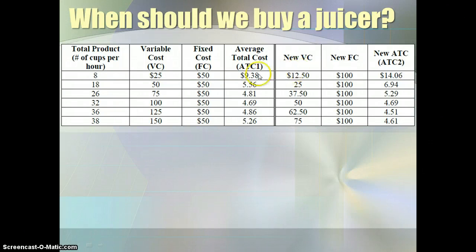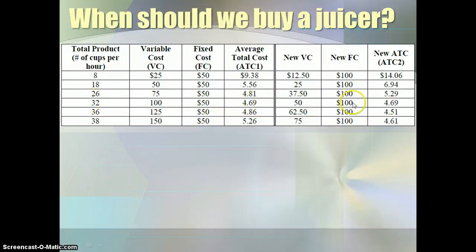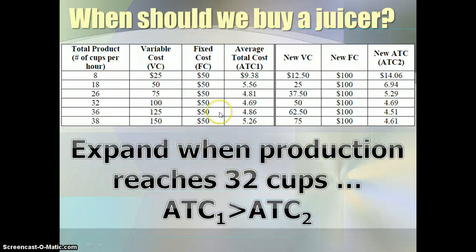They should stick with one juicer until production is greater than 32 cups per hour. At 32 cups per hour, the average total cost with one juicer is exactly the same as with two juicers — so at that point they're indifferent. But if they plan to make 33 cups or more, the average total cost begins to go down with a second juicer, so they should buy more juicers when production reaches 32 cups or more.